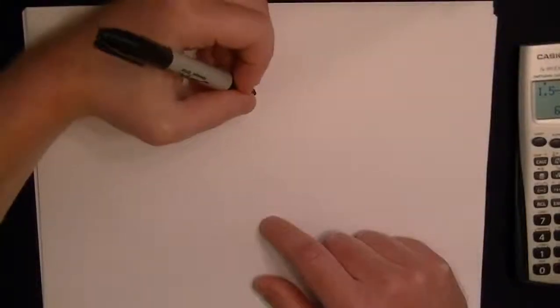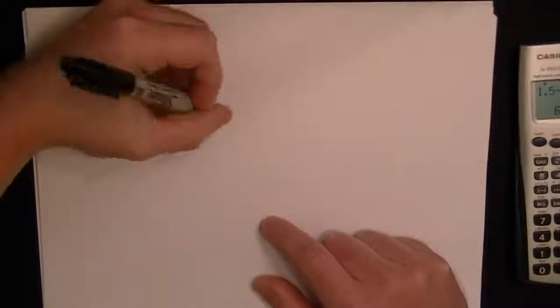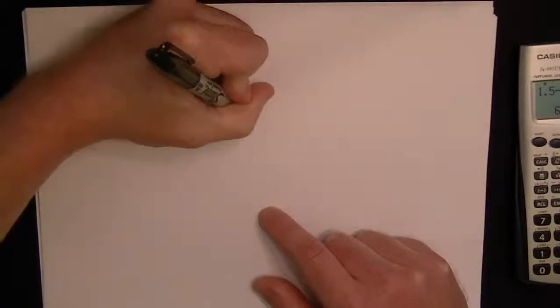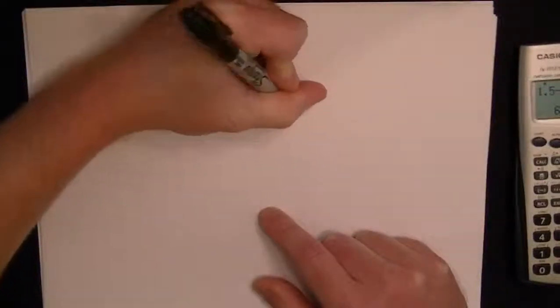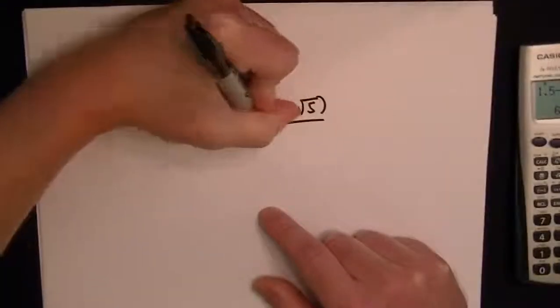Okay, we're given a formula for the golden rectangle, which is something the Greeks discovered. It has a nice ratio. So the length of this rectangle is the width times 1 plus the root of 5 all over 2.